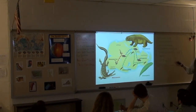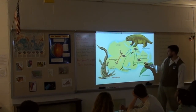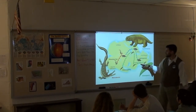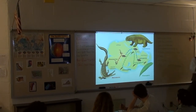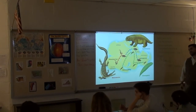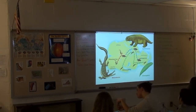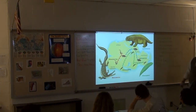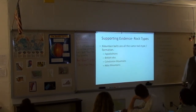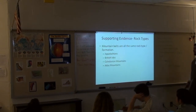Not only do the continents fit together, but it looks like they were all put together because this plant spread across continents in a nice, connecting, puzzle-piece-fitting way. So the first piece of evidence is that the fossil record matches across the continents. The second piece of evidence is rock types and mountain belts.